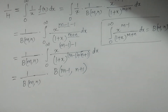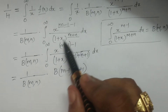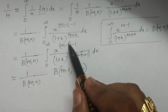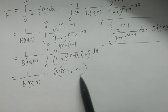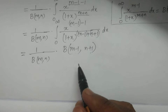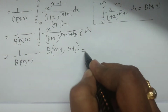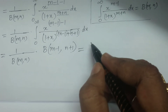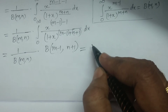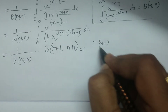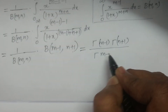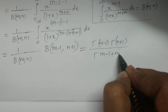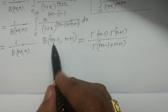Now convert in terms of the gamma function formula. Beta(m, n) equals gamma(m) times gamma(n) divided by gamma(m plus n). So the expression becomes: gamma(m minus 1) times gamma(n plus 1) divided by gamma(m plus n), multiplied by 1 divided by beta(m, n), where beta(m, n) equals gamma(m) times gamma(n) divided by gamma(m plus n). Taking gamma(m plus n) to the numerator, and noting that m minus 1 plus n plus 1 gives gamma(m plus n), the gamma(m plus n) terms cancel out.